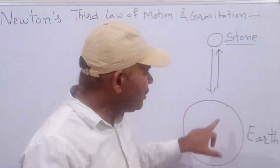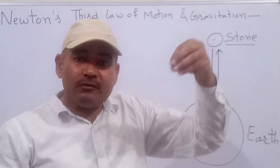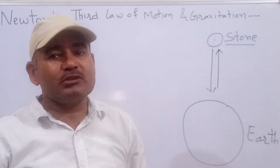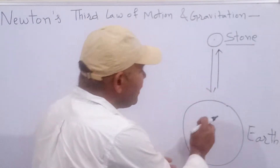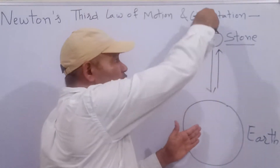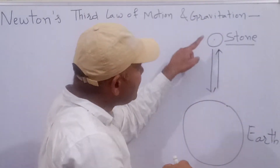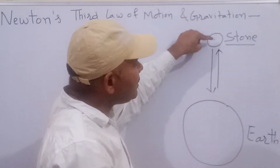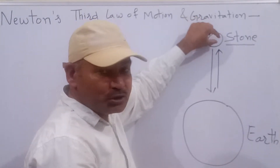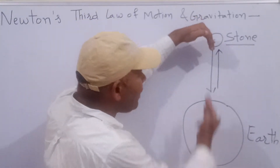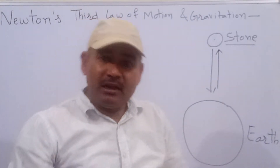दोनों का एक दूसरे के उपर — stone का भी और Earth का भी — एक दूसरे के उपर equal amount में force लग रहा है और opposite direction में लग रहा है। Earth stone को नीचे की तरफ attract कर रही है जबकि gravitational force से ही जो ये stone है, वो Earth के उपर upward direction में force लगा रहा है।